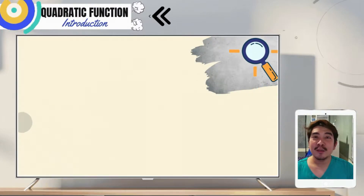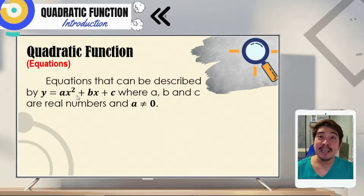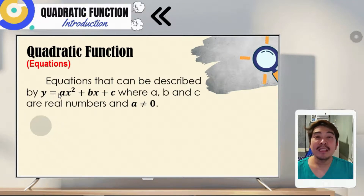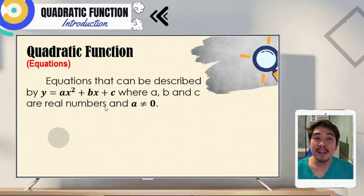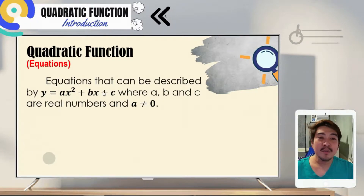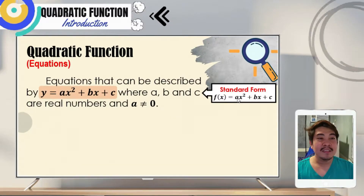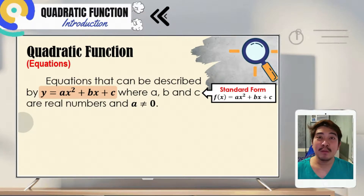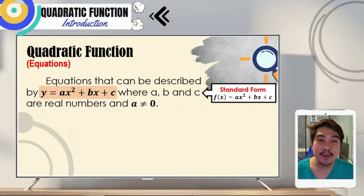Quadratic functions in terms of equations are equations that can be transformed to y is equal to ax squared plus bx plus c, where a, b, and c are real numbers and a should not be equal to zero. This can also be rewritten as f of x is equal to ax squared plus bx plus c. These forms are what we call the standard form of a quadratic function.